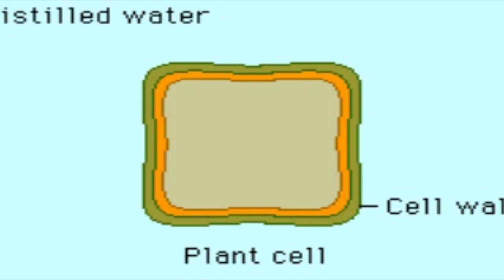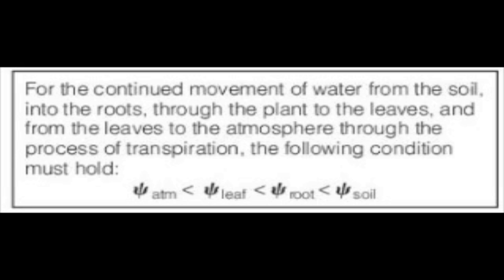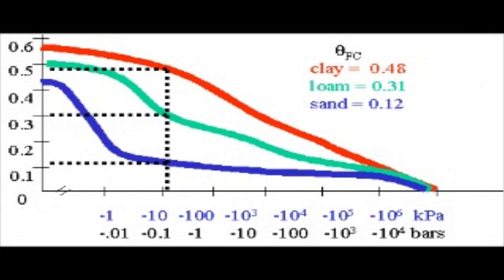For the continued movement of water from the soil into the roots, through the plant to the leaves, and from the leaves to the atmosphere through transpiration, the following condition must hold. For a given water content, the matric potential of soil is influenced strongly by its texture. Soils composed of fine particles such as clays have a higher surface area for water to adhere to than sandy soils do. Clay soils therefore maintain more negative matric potentials for the same water content. As soil water potential becomes more negative, the root and leaf water potentials must decline to maintain the potential gradient.